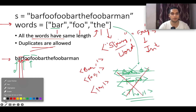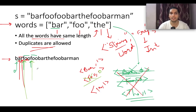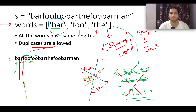Continuing forward, at the next pointer position we extract the word 'foo'. Foo is part of the map, so its frequency is reduced to zero and removed. We advance the pointer and check the next word, which is 'foo' again — but 'foo' no longer exists in the map. Therefore, this starting index also cannot be a valid answer. We abort and restart, recreating the full frequency map.